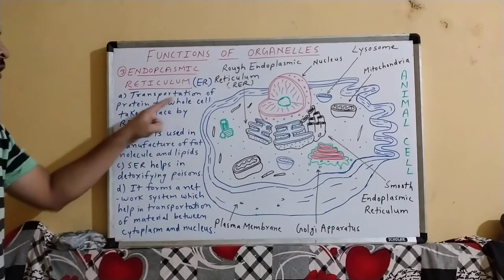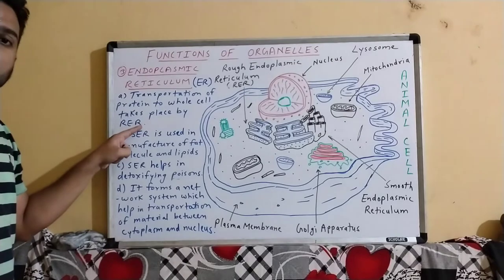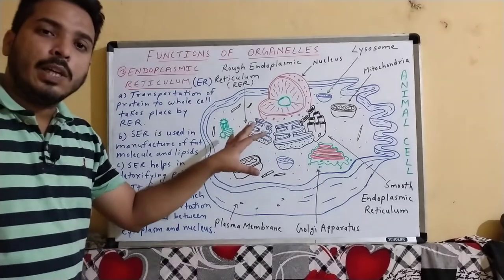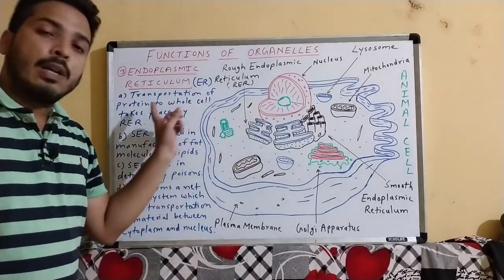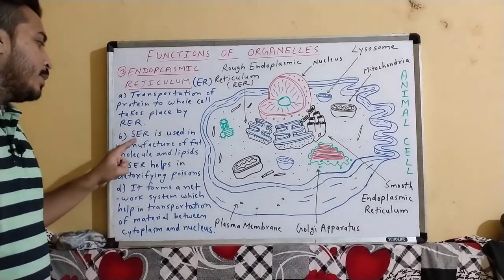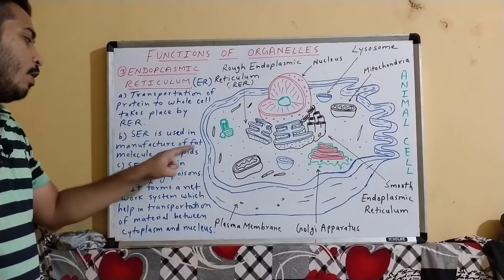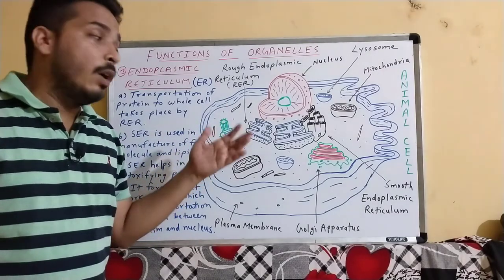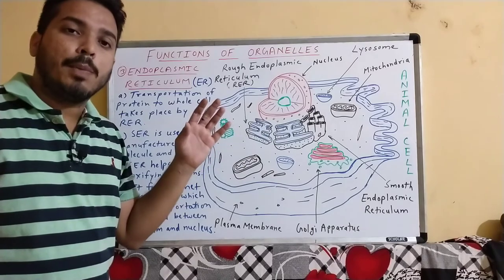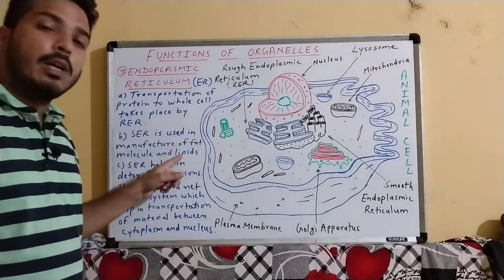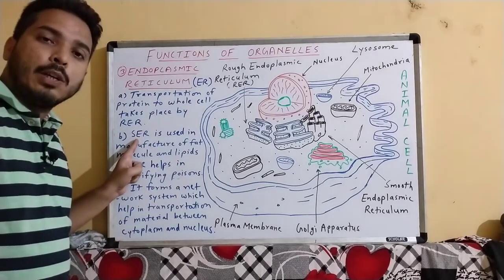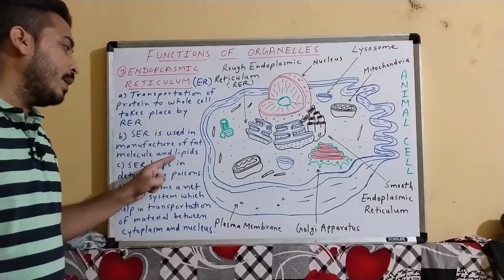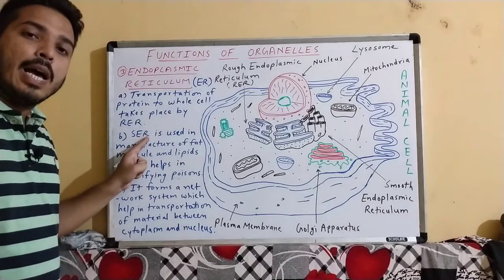The first function is transportation of protein to the whole cell, which takes place by rough endoplasmic reticulum. Wherever protein is required in the cell, the rough ER sends the protein there. Smooth endoplasmic reticulum is used in the manufacture of fats, molecules, and lipids. The cell membrane and many organelle membranes are made of fats and lipids, so their formation is the work of smooth ER. Smooth ER also helps in detoxifying poisons.